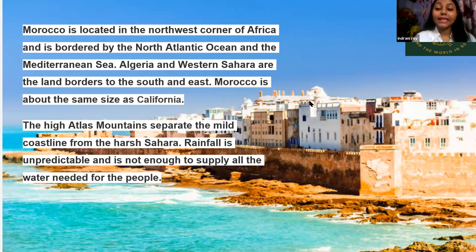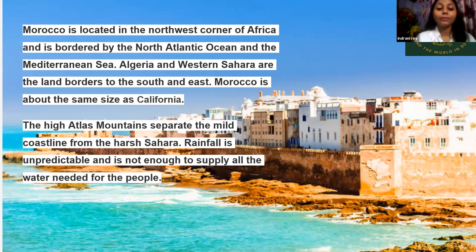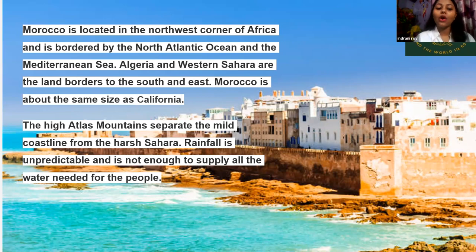Morocco is about the same size as California. The high Atlas mountains separate the mild coastline from the harsh Sahara. Rainfall is unpredictable and it is not enough to supply all the water needed for the people.